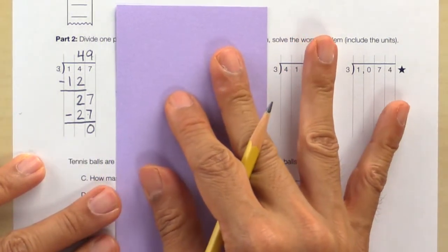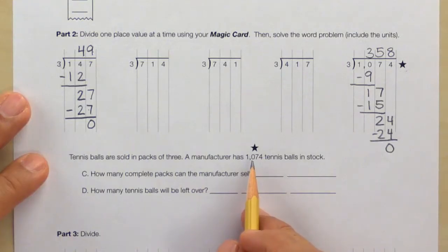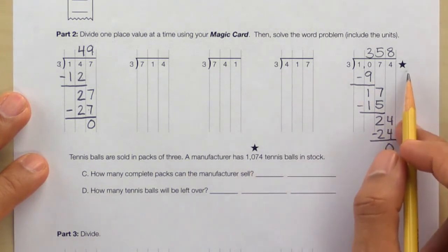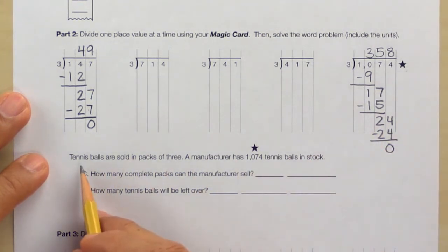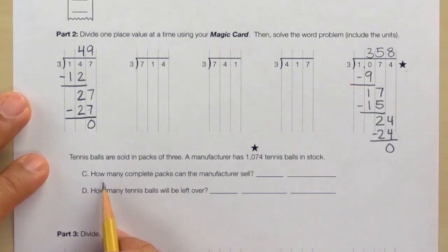Slide over, that's the end of the problem. Now let's take a look at the word problem. This star provides a clue that this word problem is related to this division problem here. The word problem says tennis balls are sold in packs of three. A manufacturer has 1074 tennis balls in stock. Here's letter C: How many complete packs...